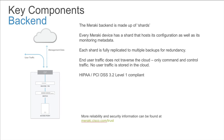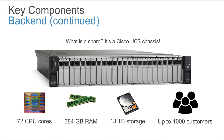Every Meraki managed device connects back to a shard of the Meraki cloud backend, which acts as the authoritative source of device software configuration, as well as the host for monitoring and analytics data for that device and all other devices in the same management organization or customer account. Every shard has its own warm spare backup in the same data center in case of hardware failure, and a replicated backup in a different data center in case of data center ISP outage, natural disaster, or other data center-wide issue. User traffic is not proxied through the cloud or stored in the cloud — only management and monitoring traffic passes between the device and its shard. These shards are actually Cisco UCS hardware; each shard can host up to 1,000 customers, though some shards may hold as few as a single customer for very large accounts.